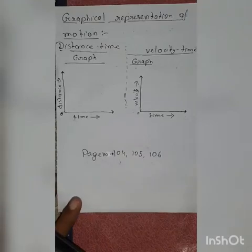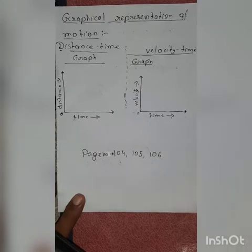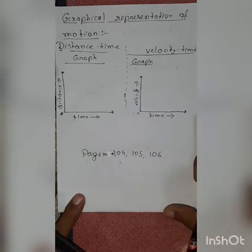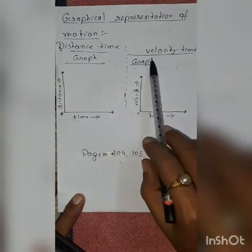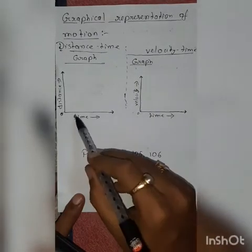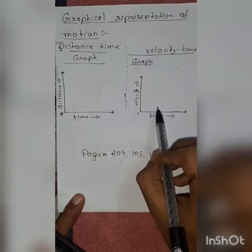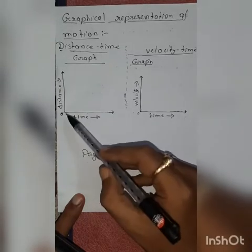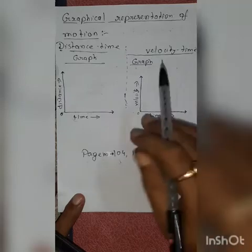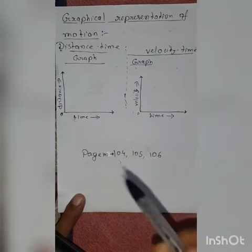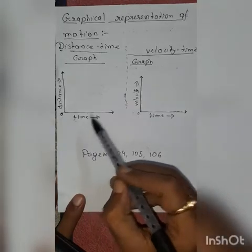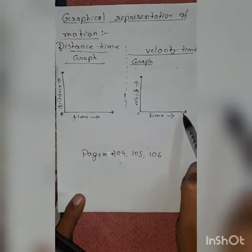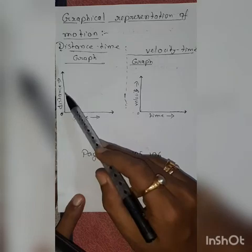Now, we are going to learn about graphical representation of motion. By graphical representation of motion, we mean to represent the motion of a particular object on a graph paper. There are two types of graphs included in your syllabus: the first one is a distance-time graph and the second one is a velocity-time graph. The point of origin is O. Time always remains on the x-axis, and in case of the distance-time graph, distance will remain on the y-axis.